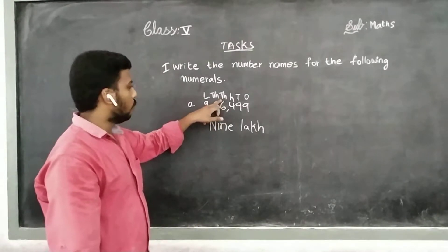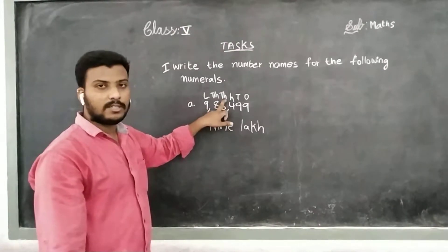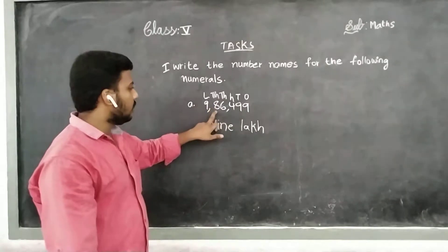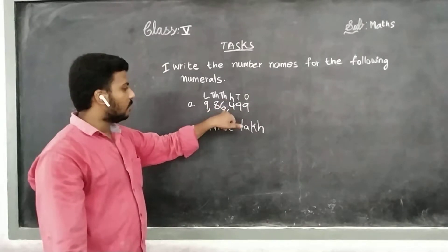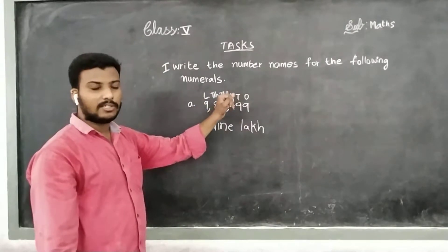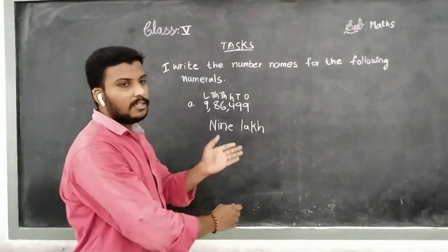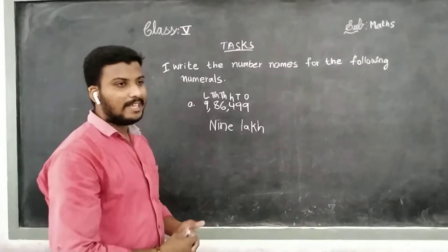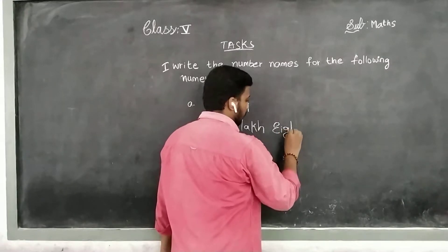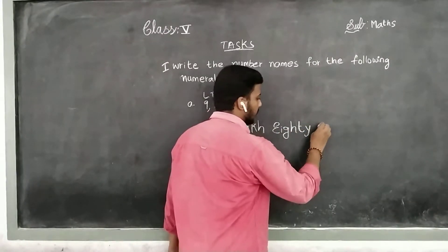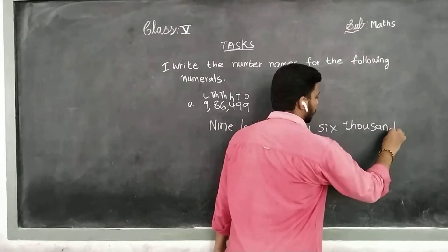Again there is a thousands-related value. In the place of thousands, we have the value 6. 6 into 1,000 — how much? 6,000. Previously, in ten thousands we have 8: 8 into 10,000 equals 80,000. And in the place of thousands we have 6: 6 into 1,000 equals 6,000. Right now you combine both these thousands forms: 80,000 plus 6,000. We will count the overall value as 86,000.